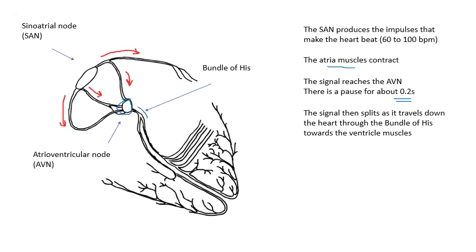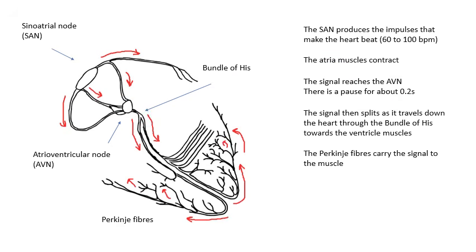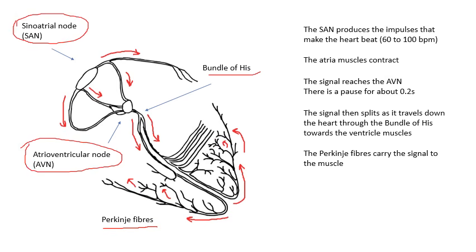After the 0.2 second delay, the signal travels down the heart to the ventricles through something called the bundle of His — a great name — which splits in two, one branch going to the right side and one to the left side. That signal makes the ventricles contract. These fibres branch into lots of little branches into the muscles of the ventricles — all those little branches are called the Purkinje fibres. The Purkinje fibres carry the signal to the actual muscle. You need to know: SAN, sinoatrial node; the bundle of His; Purkinje fibres; and the 0.2 second delay.